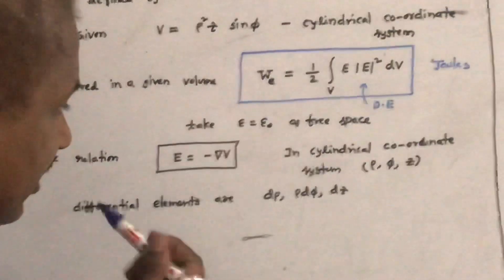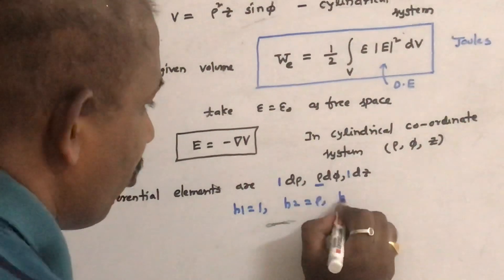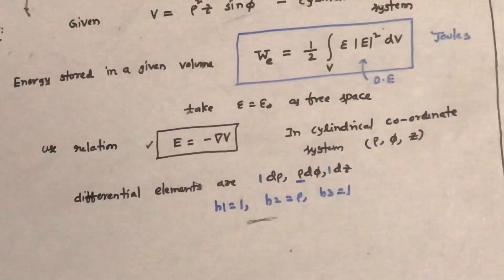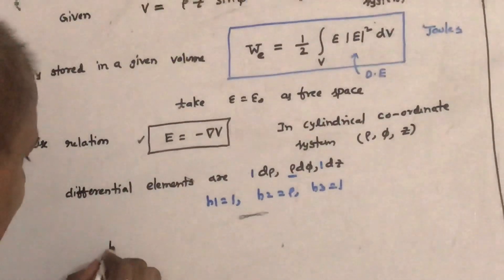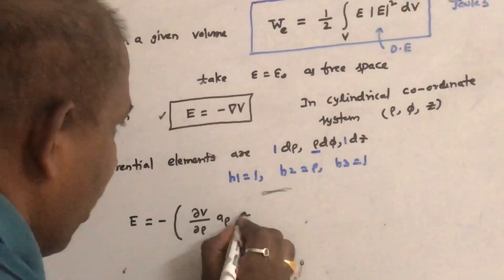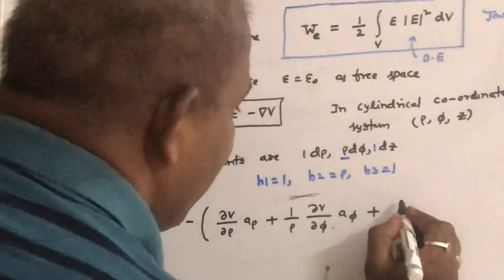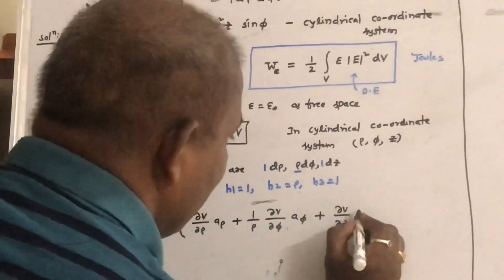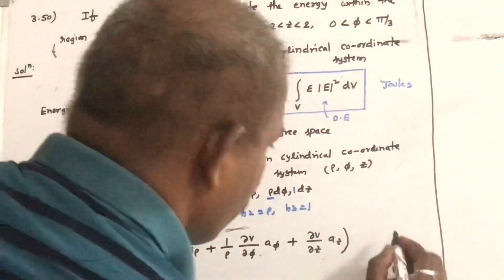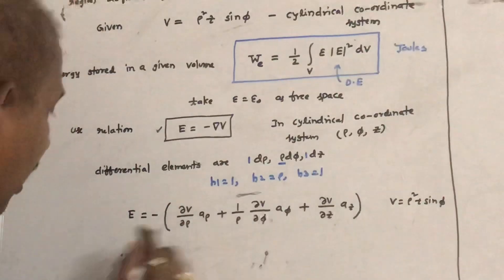Now write the formula. In cylindrical coordinate system, E is written as minus of: (1/H₁)(∂V/∂ρ) a_ρ + (1/H₂)(∂V/∂φ) a_φ + (1/H₃)(∂V/∂z) a_z, which is (1/1)(∂V/∂ρ) a_ρ + (1/ρ)(∂V/∂φ) a_φ + (1)(∂V/∂z) a_z. Since V is given as ρ² z sin φ, differentiate and substitute V in this formula to find E.